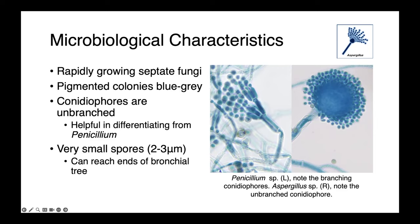In these images on the right, the left picture is a Penicillium mold, and you can see these branched conidiophores — they almost look like fingers from which the spores come off of. On the right, we have an Aspergillus with an unbranched conidiophore, which almost looks like a dandelion. The spores of Aspergillus are very small, two to three microns, and this is small enough that they're able to reach the end of the bronchial tree and make their way down into the bottoms of the lungs.